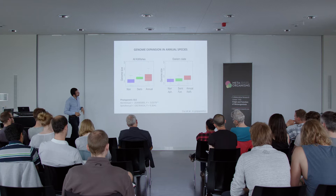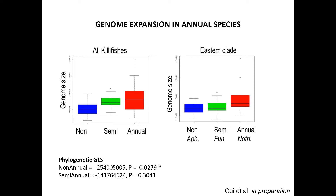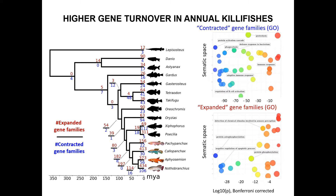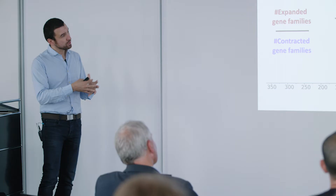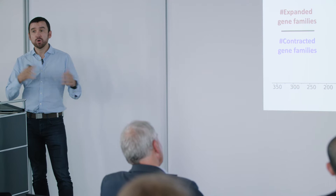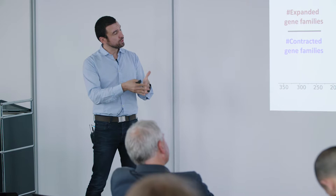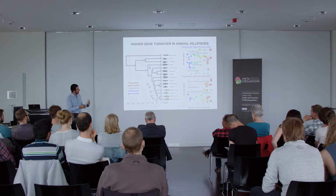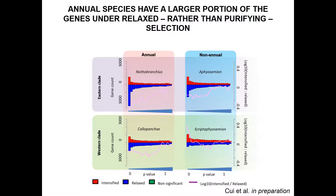We studied gene family expansion and contraction in annuals and non-annuals. Not only can we look at non-coding and repetitive parts of the genome, but even focusing on the coding parts, we can see what gene families have expanded or contracted. We found that immune genes are particularly contracted — annual species lose a lot of genes. This has to do with relaxation of selection. The take-home message is that short lifespan emerges in populations that undergo continuous bottlenecks.